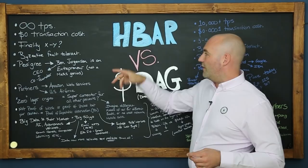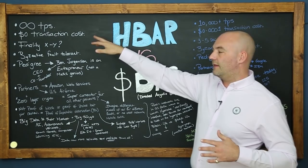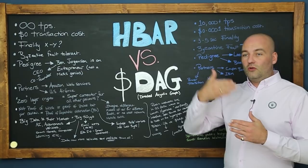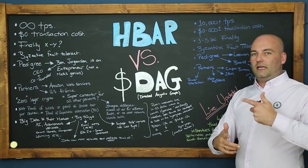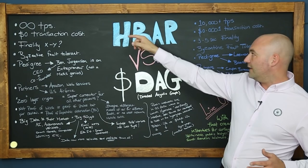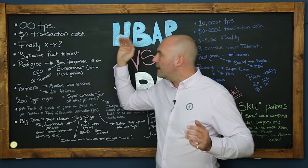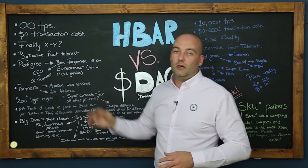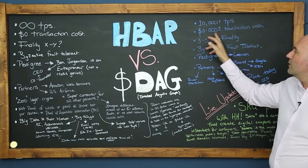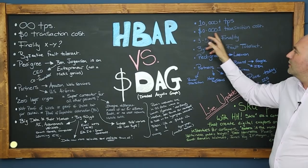So transactions per second — infinite versus HBAR's 10,000. You might say straight off the bat one-nil. However, with sharding, Hedera Hashgraph is going to be practically infinite transactions per second too — and actually the more transactions taking place, the quicker they can take place. So with sharding it's level pegging if that's true. But let's give Constellation the benefit of the doubt: infinite transactions per second. Also zero transaction costs — so that's two-nil, although HBAR's 0.0001 dollars is as good as makes no difference.